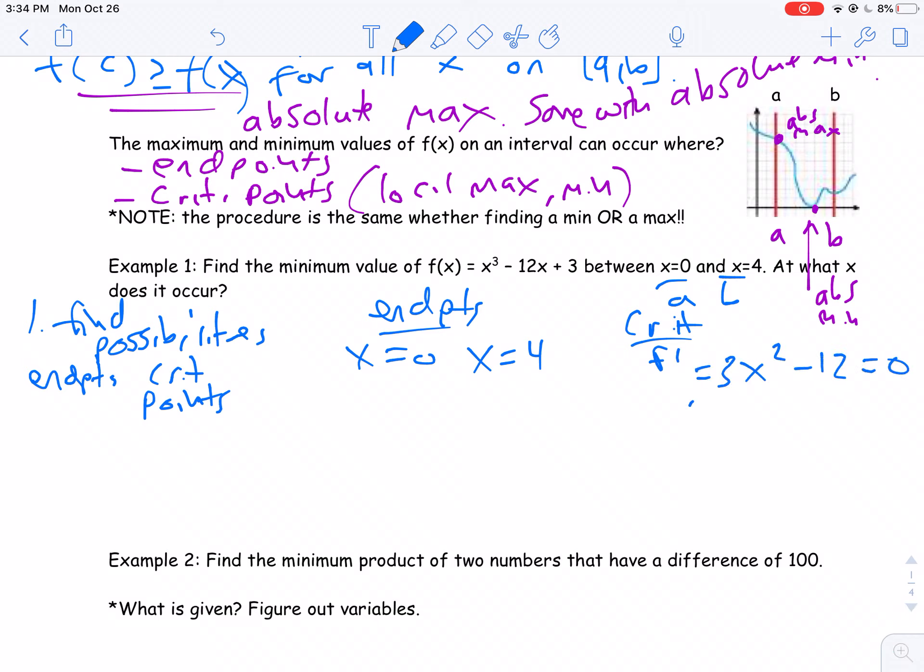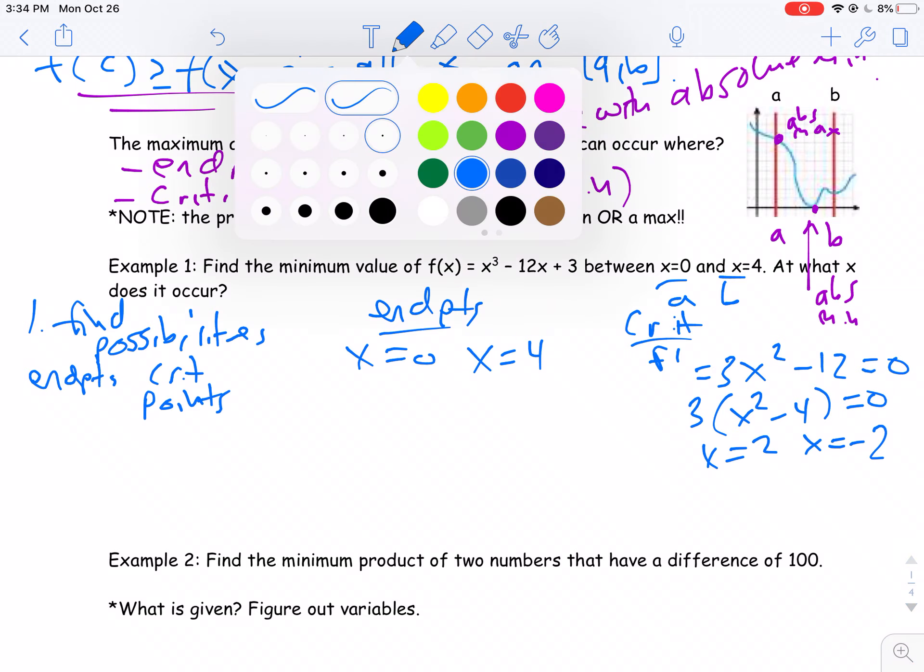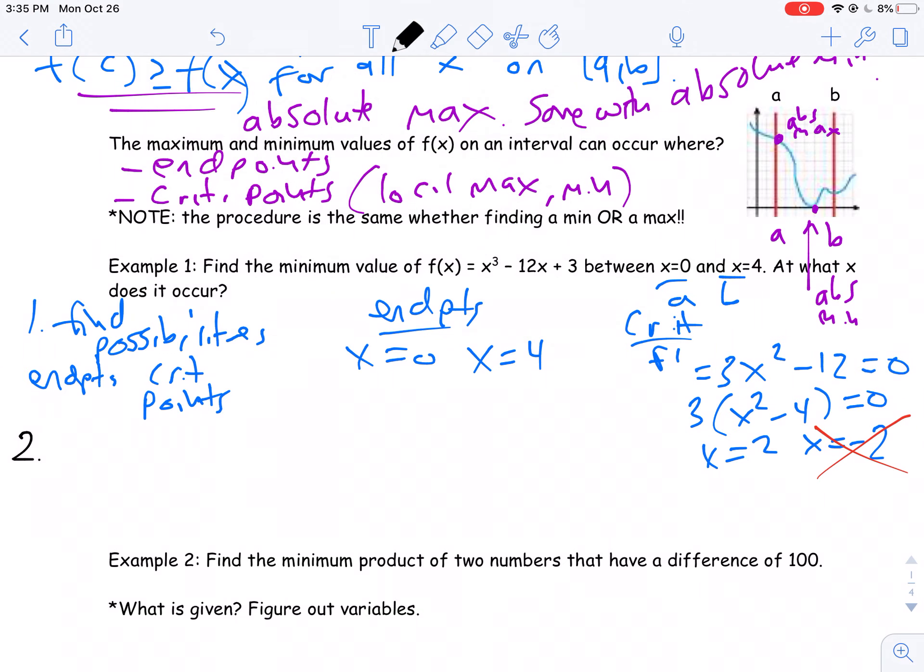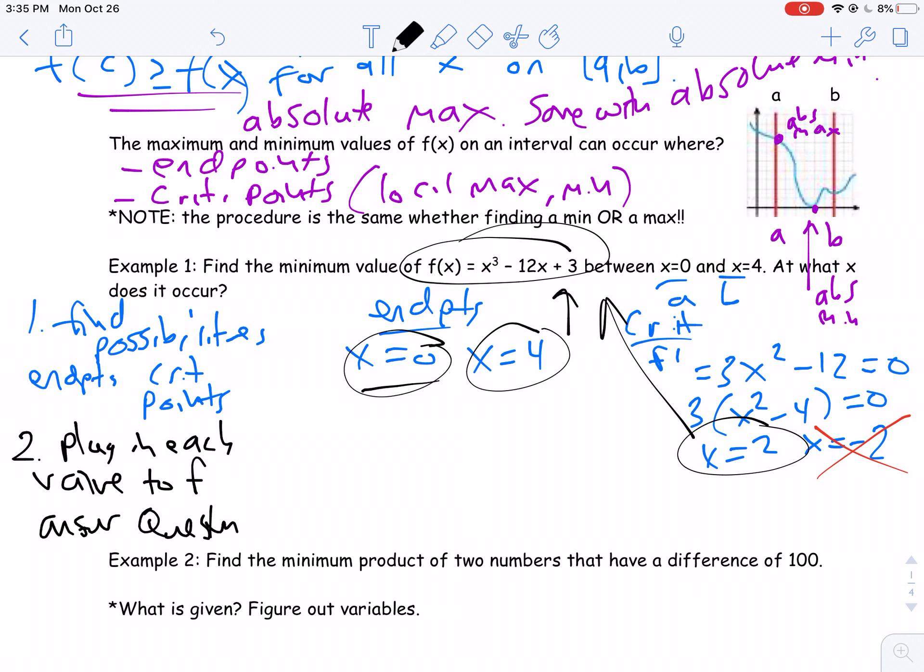All these problems are the same. So what you're going to do is you're going to find the possibilities, and the possibilities are going to be the endpoints and the critical points. Okay, so my endpoints here are x equals 0 and x equals 4. As for my critical points, that's where the derivative equals 0. So my f prime is 3x squared minus 12 equals 0. So I'll factor out a 3. I'm left with x squared minus 4. So x could be 2 or x could be negative 2. Now, I'm looking between 0 and 4. So does negative 2 matter? No.